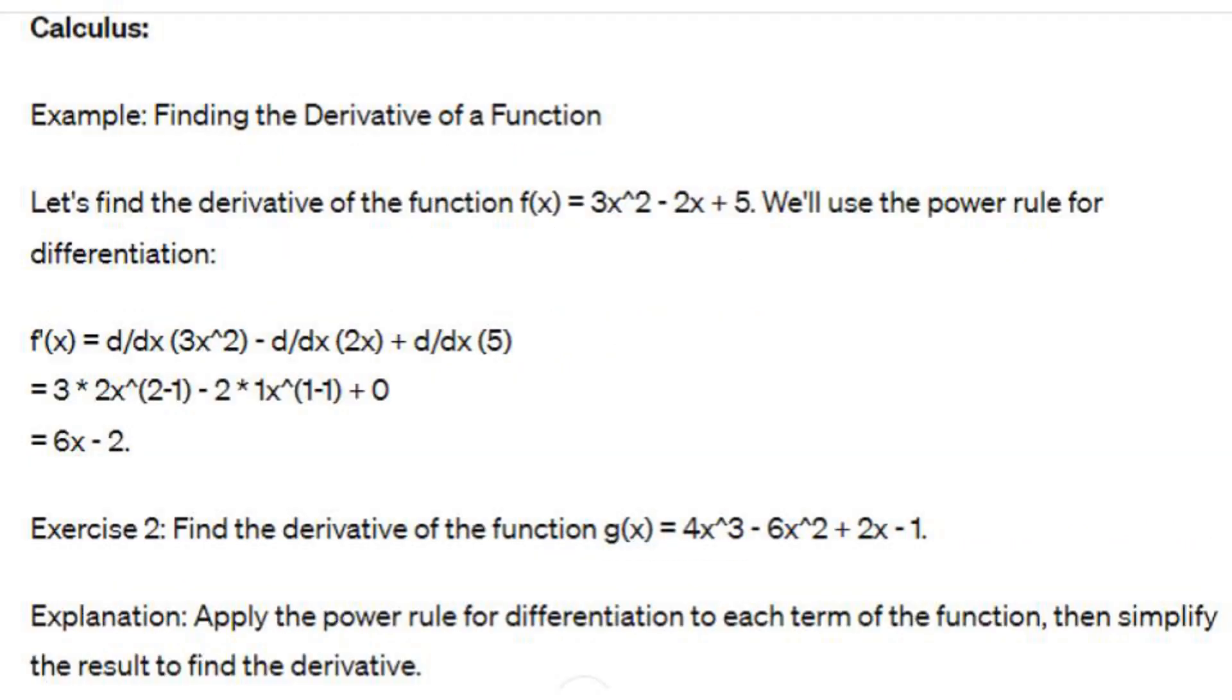Calculus example: Finding the derivative of a function. Let's find the derivative of the function f(x) equals 3X squared minus 2X plus 5. We'll use the power rule for differentiation. f'(x) equals d/dx of 3X squared minus d/dx of 2X plus d/dx of 5, equals 3 times 2X to the 1 minus 2 times 1X to the 0 plus 0, equals 6X minus 2. Exercise 2: Find the derivative of the function g(x) equals 4X cubed minus 6X squared plus 2X minus 1. Explanation: Apply the power rule for differentiation to each term of the function, then simplify the result to find the derivative.